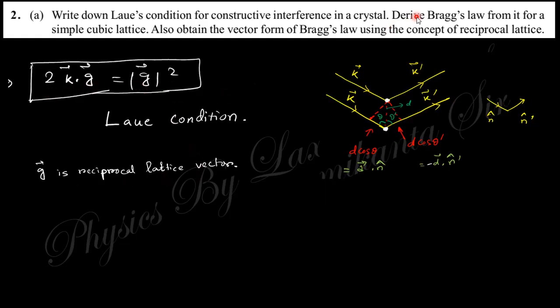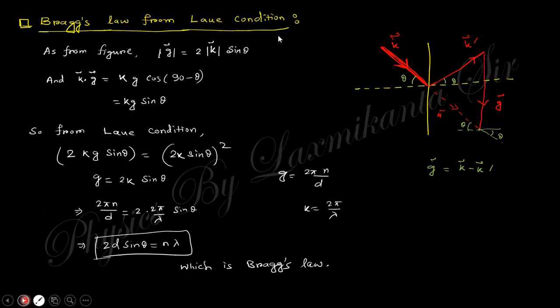The Laue's condition says that 2k·g equals |g|² where g is the reciprocal lattice vector. Now we need to derive Bragg's law from it for a simple cubic lattice and obtain the vector form of Bragg's law within the concept of reciprocal lattice.